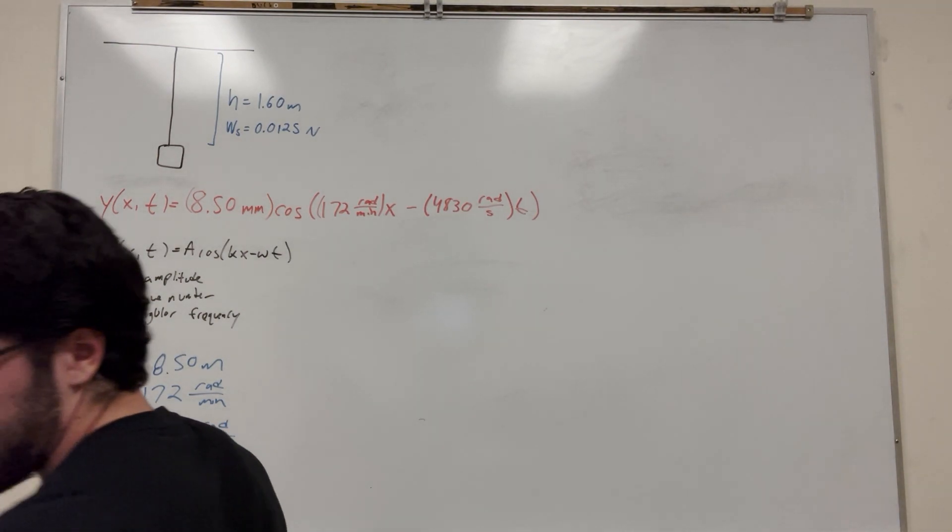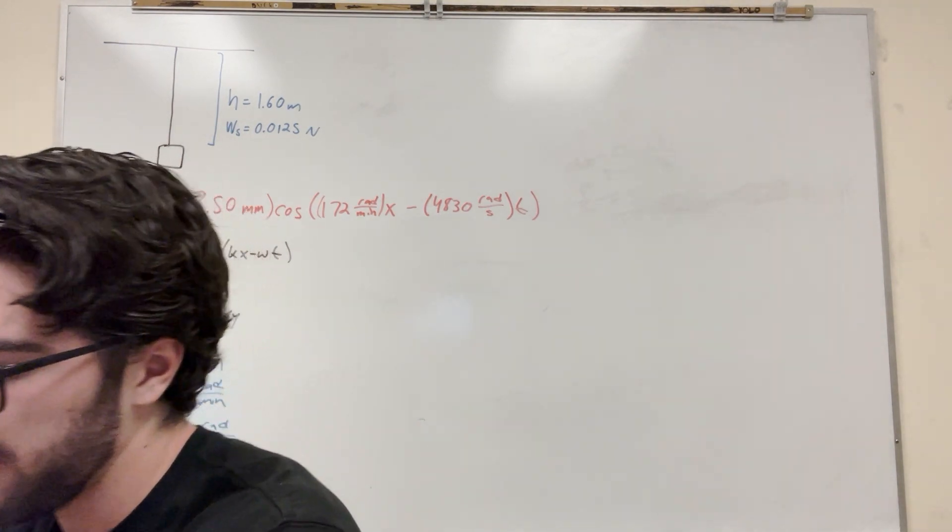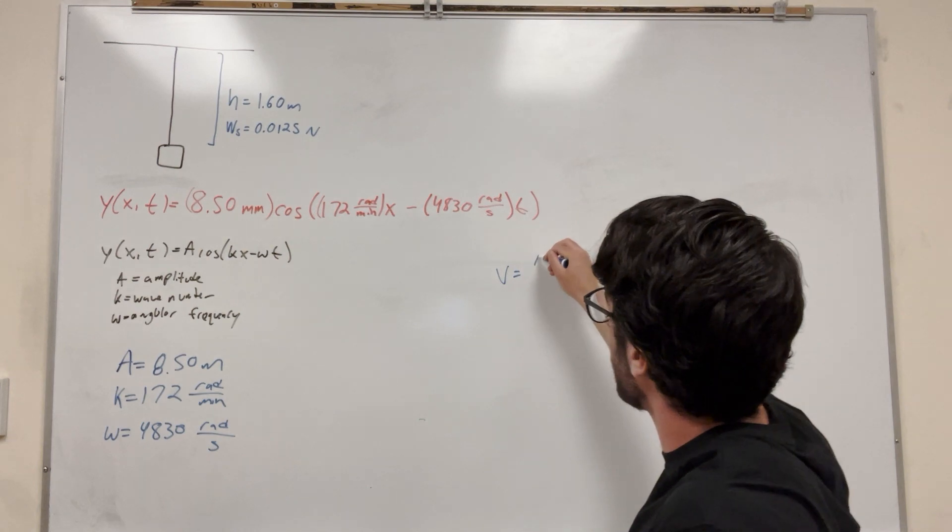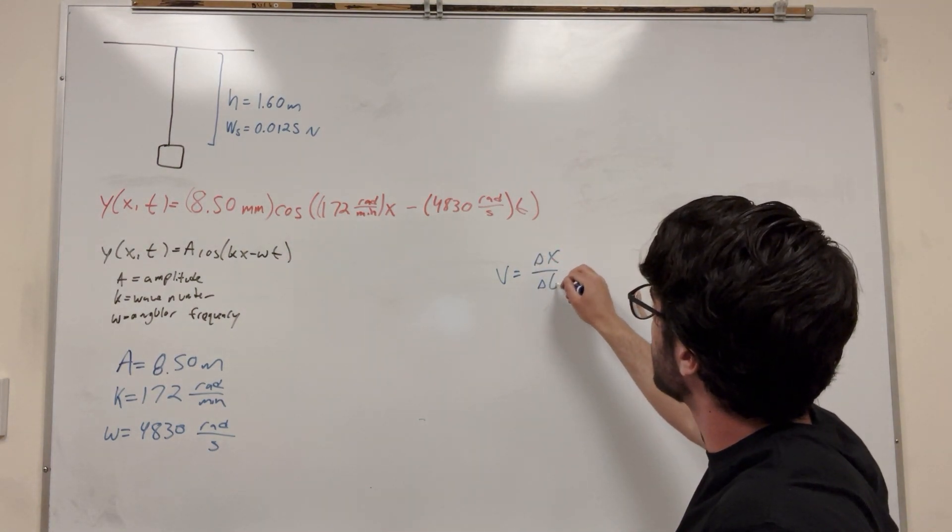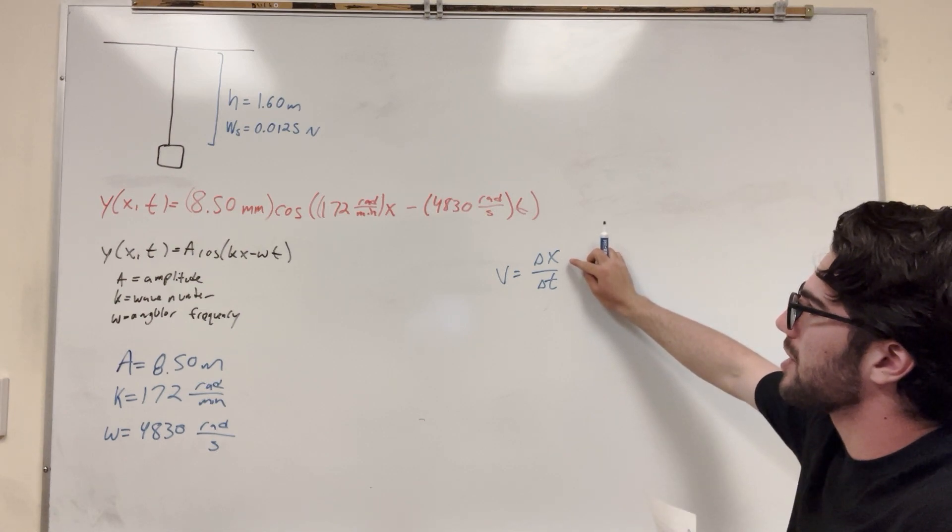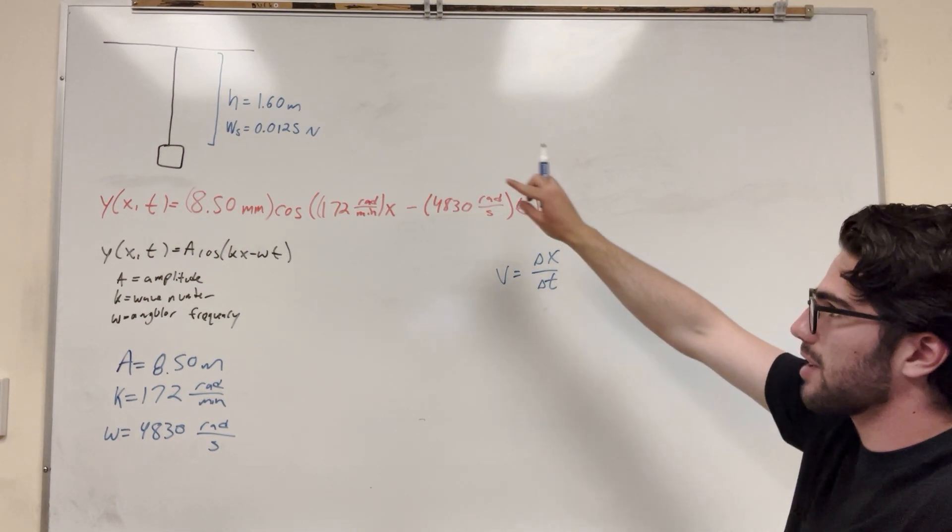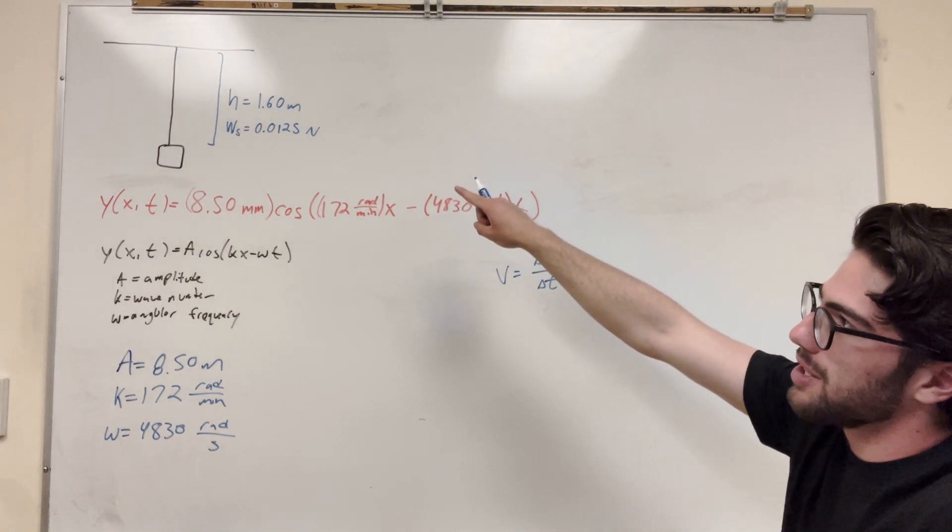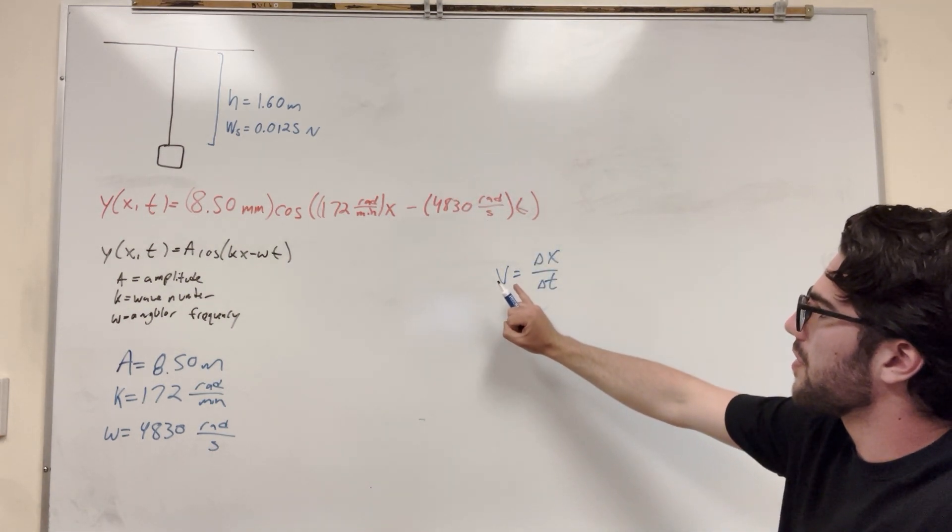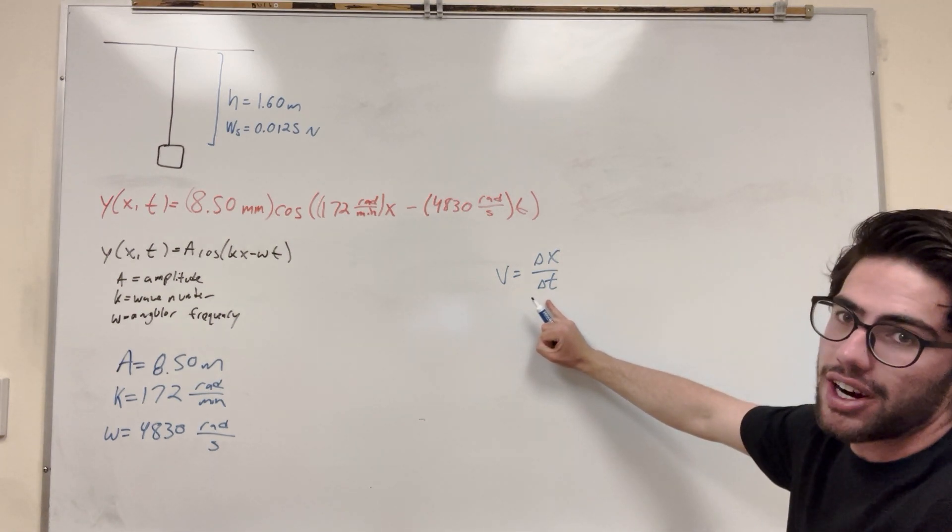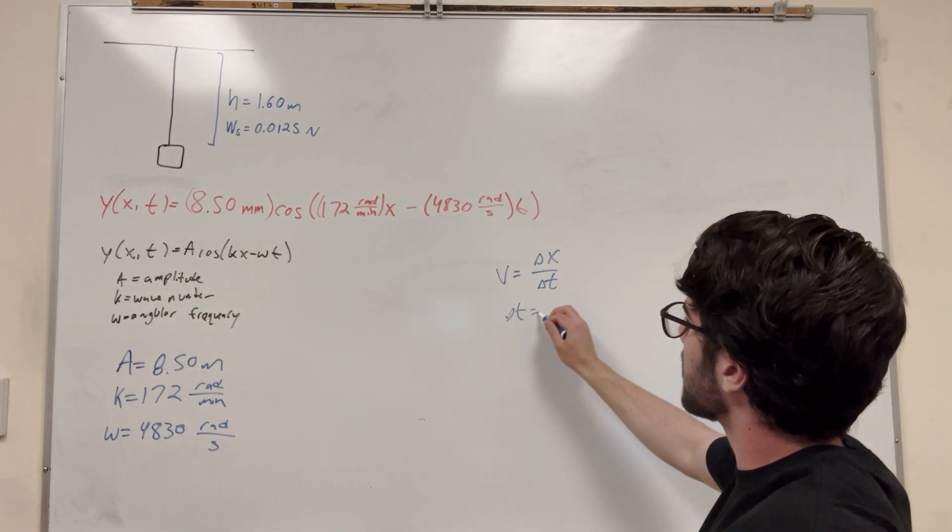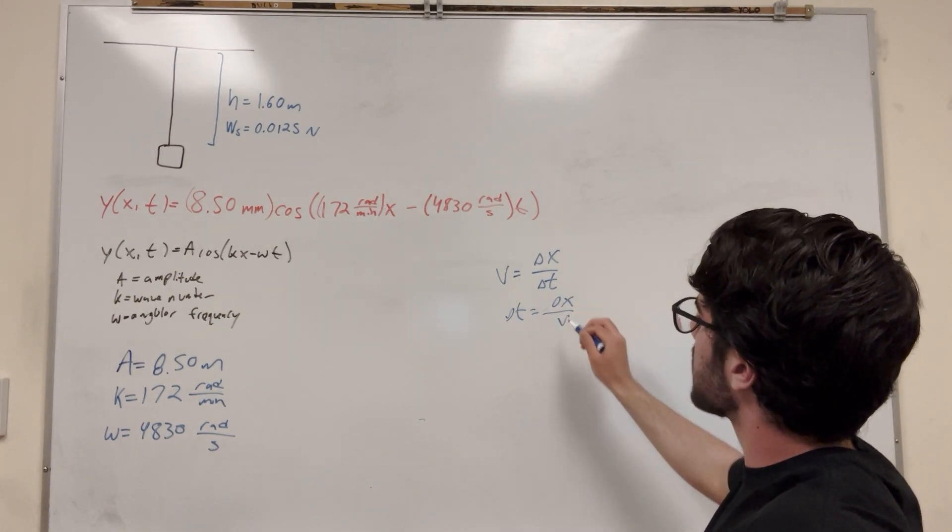Alright, so how are we going to solve this first part? Well, we know in the equation a long time ago that velocity is equal to change in position over change in time. So we're trying to find how long it takes. We know its change in position, right? It's going to be from one end to the other, which is 1.6 meters we found earlier on, just from a given. So if we can find this velocity, that means we can find how long it takes to cover that distance by just rearranging.